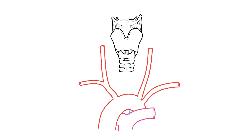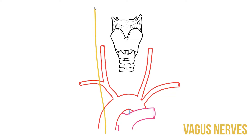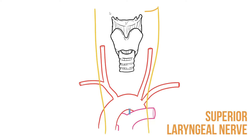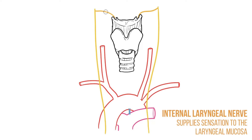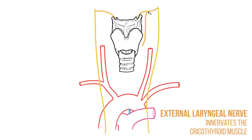We're now ready to add some laryngeal nerves. Innervation to the larynx comes via branches of the vagus nerve. This nerve is found on both sides of the body, where it leaves the brainstem to supply organs in the chest and abdomen with parasympathetic innervation. The superior laryngeal nerve leaves the vagus and heads straight towards the larynx, then splits into internal and external laryngeal nerves. The internal branch supplies sensation to the lining of the larynx, whilst the external branch innervates cricothyroid, an intrinsic laryngeal muscle that helps to tense the vocal cords.